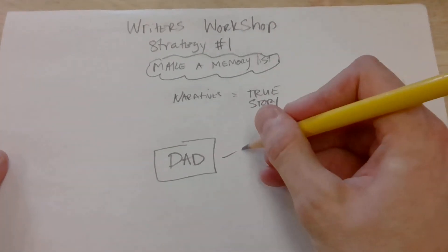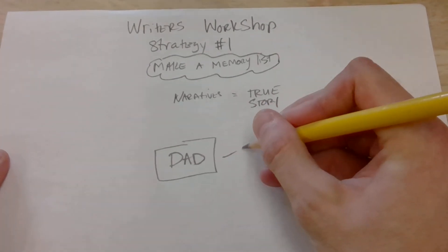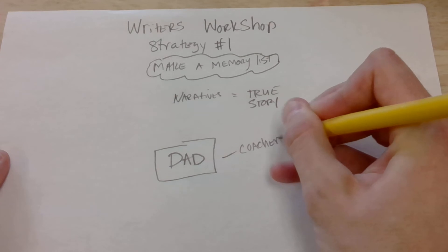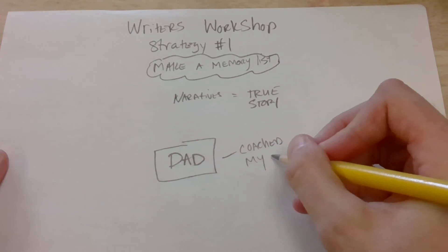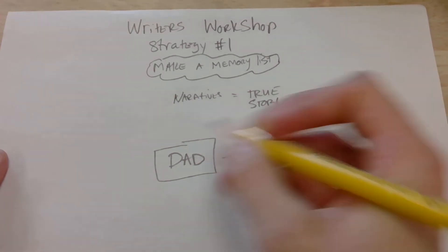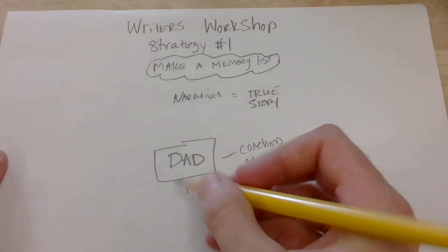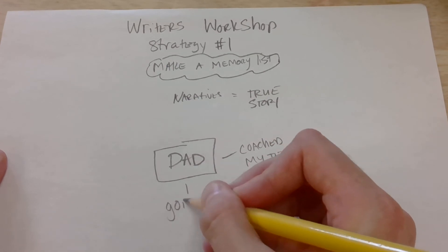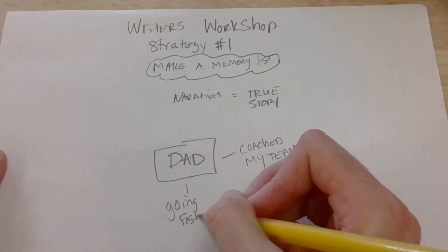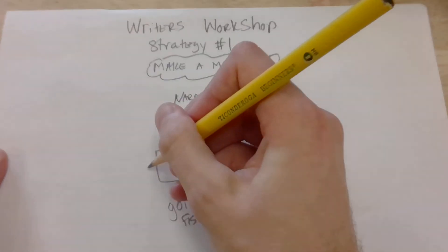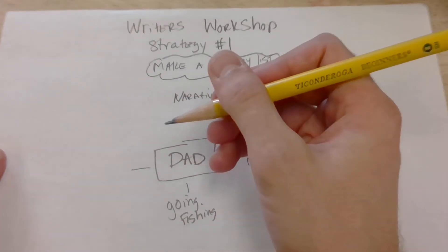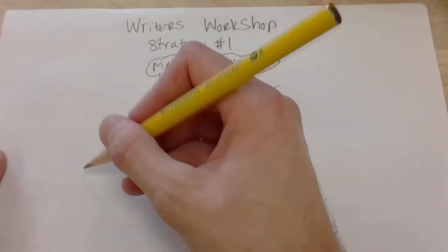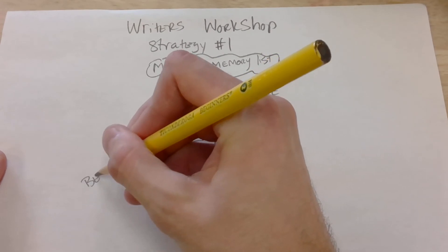I make a list of things that remind me of very vivid memories of my dad. For example, he coached my basketball team once. Another good memory I have about my dad is going fishing. And the third memory is that my dad always made the best pancakes.